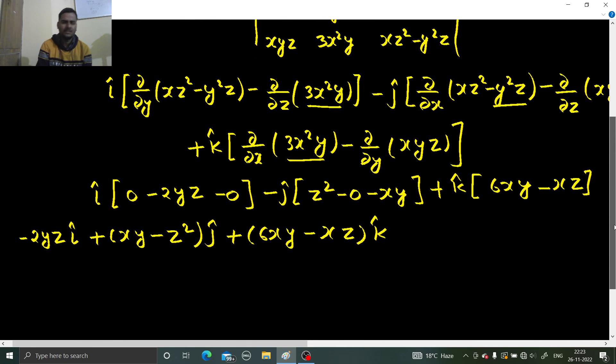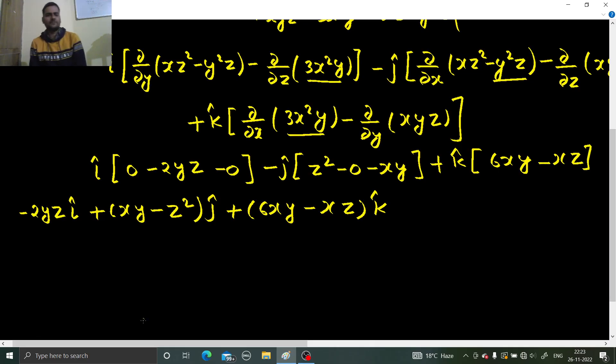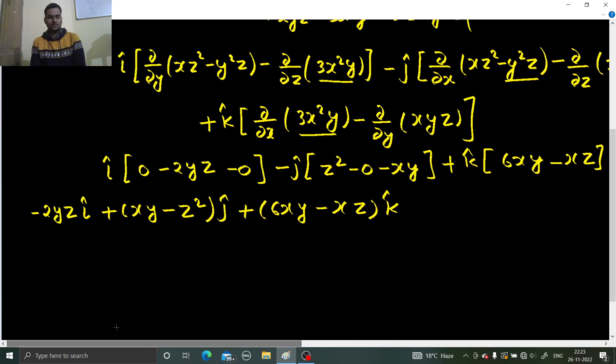After that, it's just partial derivatives. Keep in mind: when doing partial derivative with respect to x, y and z are constant. When doing with respect to y, x and z are constant. When doing with respect to z, x and y are treated as constant. That's it.